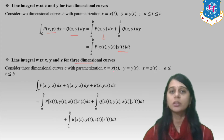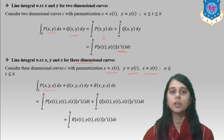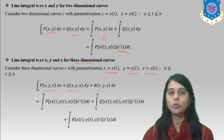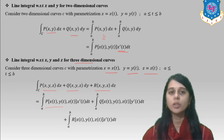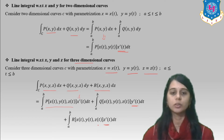Similarly for three dimensions: x = x(t), y = y(t), z = z(t), with t from a to b. The integral of P(x,y) dx + Q(x,y,z) dy + R(x,y,z) dz equals the integral from a to b of P(x(t), y(t), z(t))·x′(t) plus Q·y′(t) plus R·z′(t), dt.